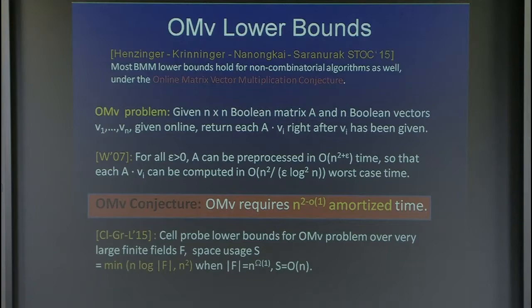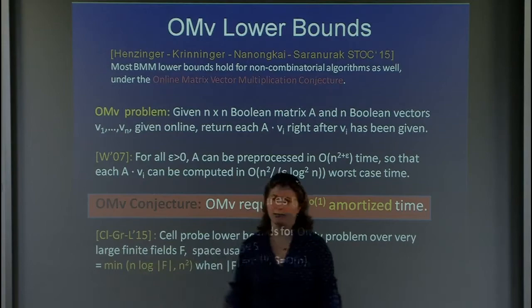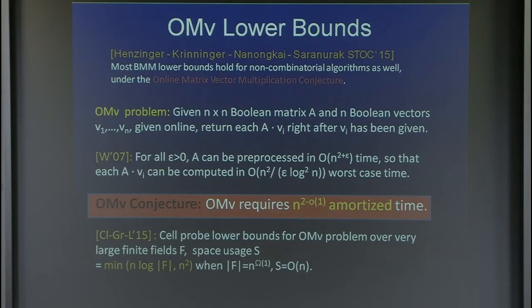There were attempts to prove the OMV conjecture. A recent attempt showed a lower bound in the cell probe model: n times log of the field size times n-squared, only meaningful when the field size is large, giving something super-linear. It's not what we want, but it's getting there. This result is for the instantiation when space is linear; for arbitrary space they have a more complicated expression.